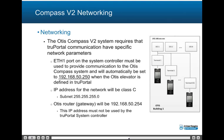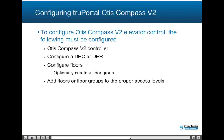ETH1, the second port on the system controller, must be used to provide communication to the Otis Compass system, and it will automatically be set to 192.168.50.250 when the Otis Elevator is defined in TruePortal. The IP address for the network will be class C using a mask of 255.255.255.0. On the Otis system, the Otis router or gateway will be 192.168.50.6; this IP address must not be used by the TruePortal system controller on ETH0. To configure Otis Compass V2 elevator control, configure the Otis Compass V2 controller, configure a DEC or DER, configure floors and optionally create a floor group, then add floors or floor groups to the proper access levels.